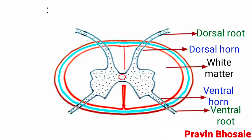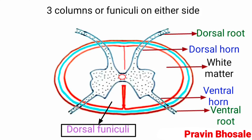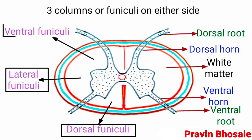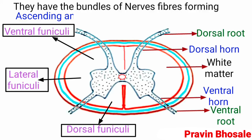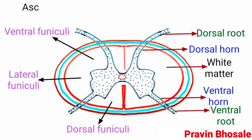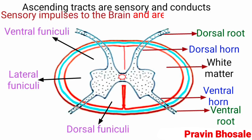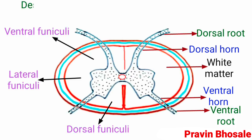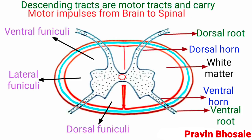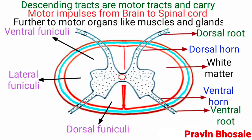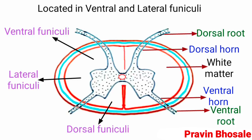The white matter divides into three columns or funiculi on either side: the dorsal funiculi, lateral funiculi, and ventral funiculi. They have bundles of nerve fibers called ascending and descending tracts. Ascending tracts are sensory and conduct sensory impulses to the brain; they are present in the dorsal funiculi. The descending tracts are motor tracts and carry motor impulses from the brain to the spinal cord and further to motor organs like muscles and glands. These are located in the ventral and lateral funiculi.